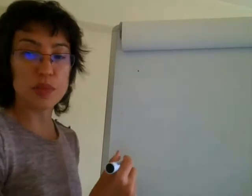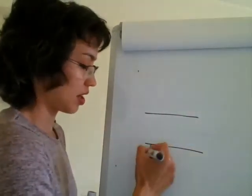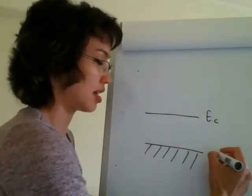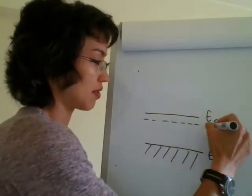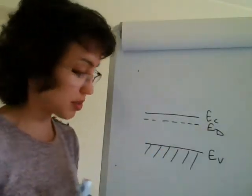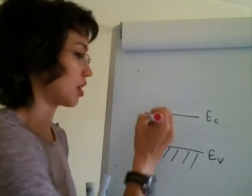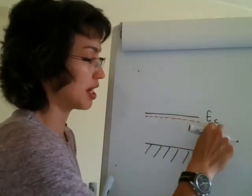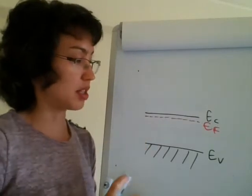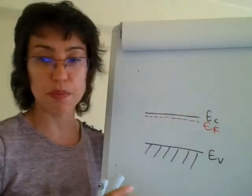We draw energy band diagrams as represented at absolute zero. For an n-type doped semiconductor, we can represent it with EC, EV, and ED marked — the donor energy level confirms it's n-type. What we usually do is draw in the Fermi level: EF sits halfway between EC and ED, very close to the conduction band. So the Fermi level is near the top of the band gap for an n-type semiconductor.